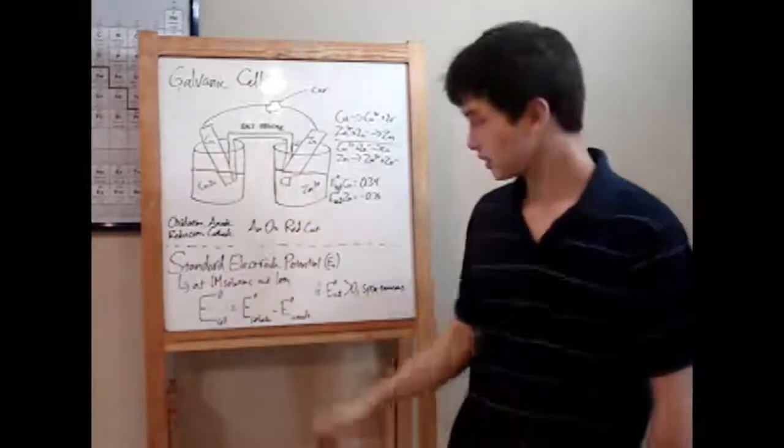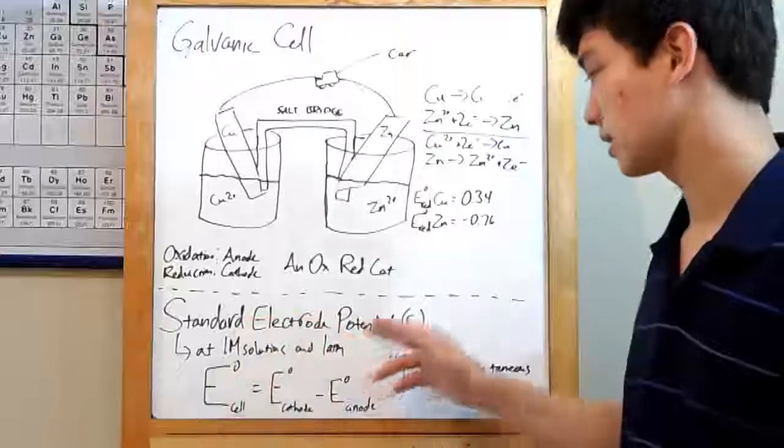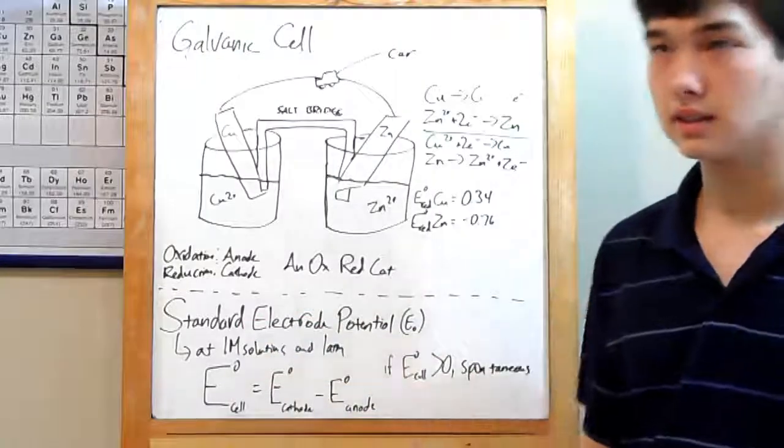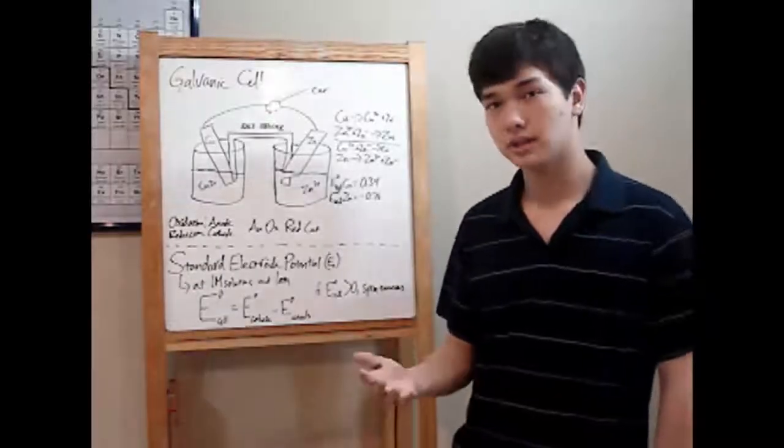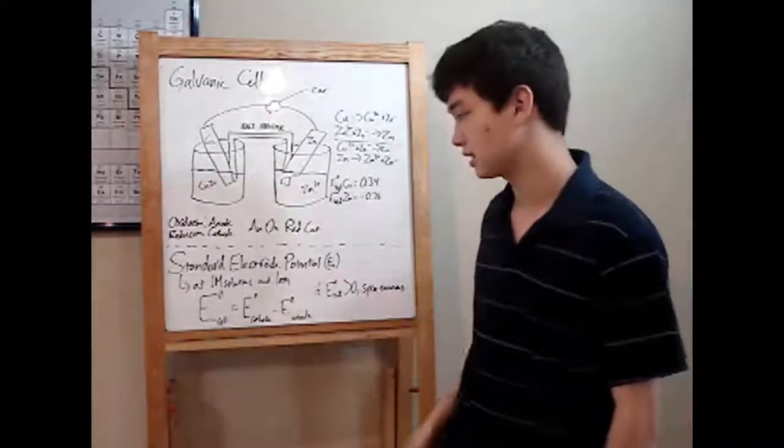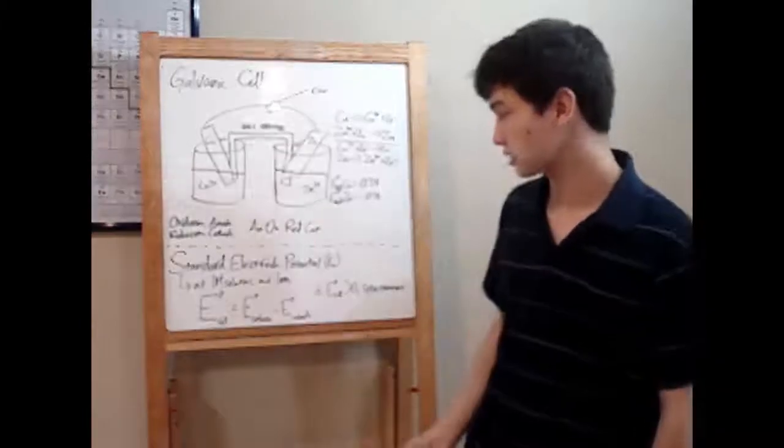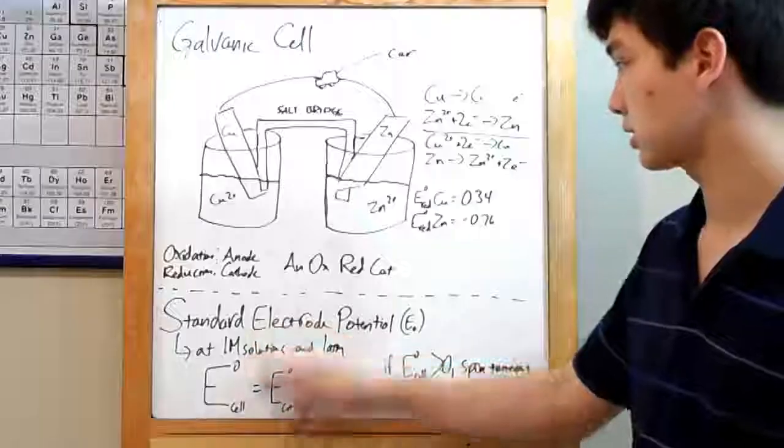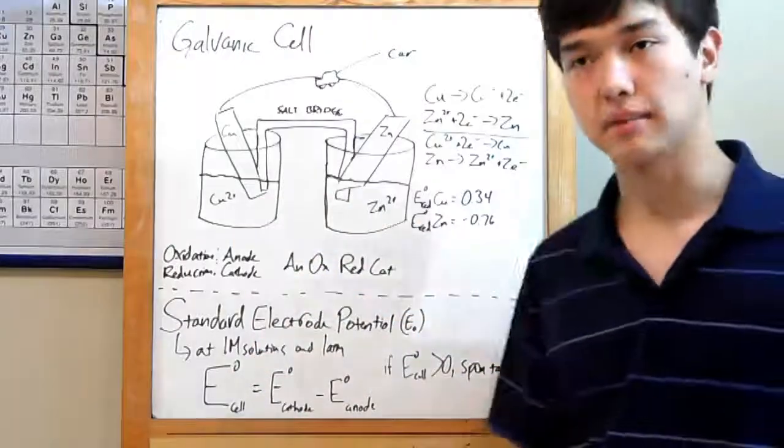Okay, over to spontaneity. Spontaneity is found using your standard electrode potential. Wherever you get this, most classes, you'll get a table with it or you can find it in your textbook. Otherwise, it should just be attached to the problem. Your standard electrode potential is a voltage at one molar solution, these, and at one atmosphere.